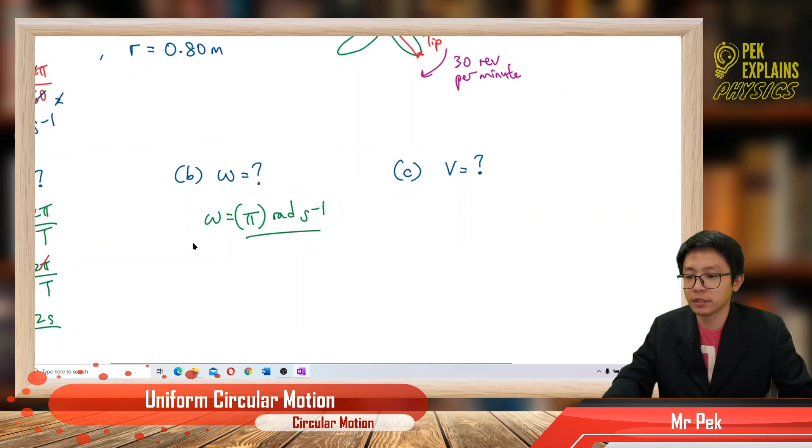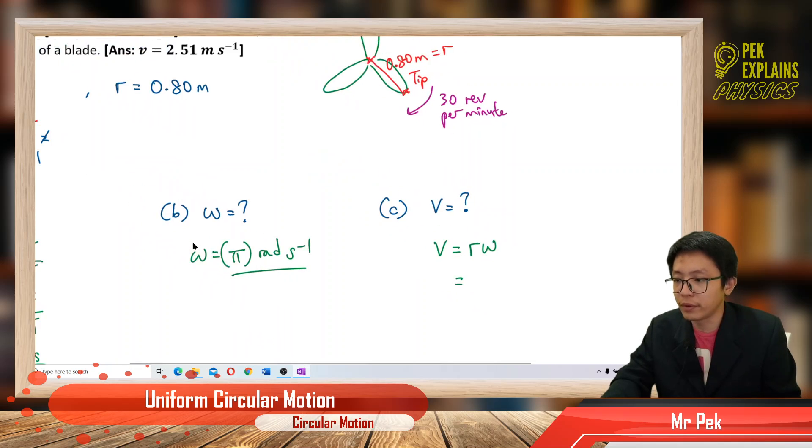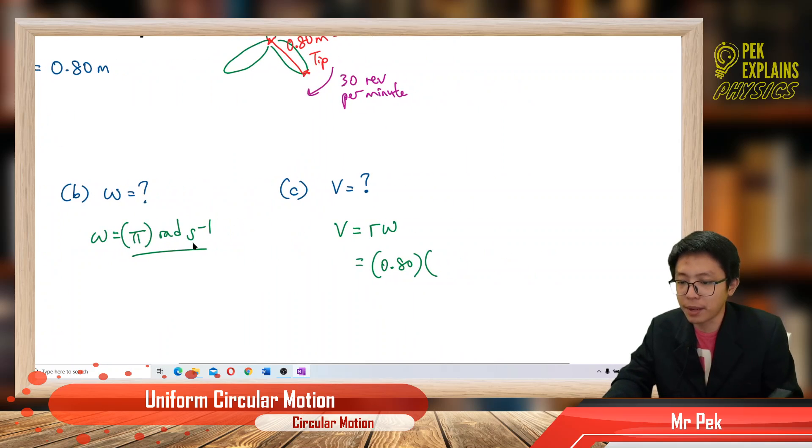And what is our velocity? The speed of the tip is just using the formula v equals r omega. So our radius is 0.8 meter, so we just put 0.8.